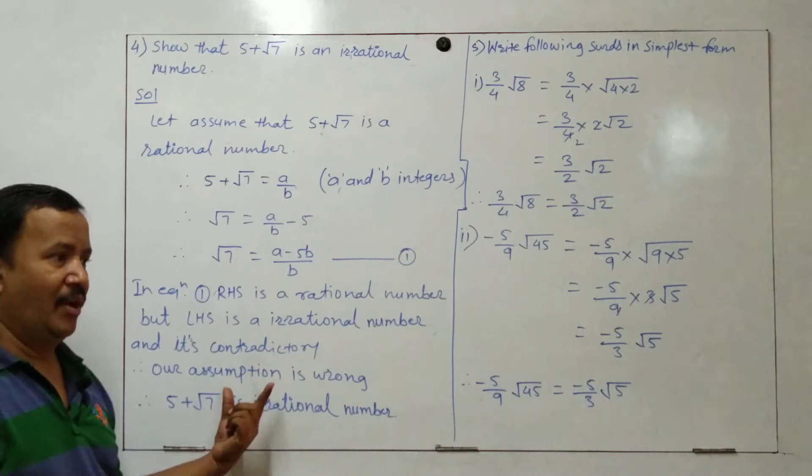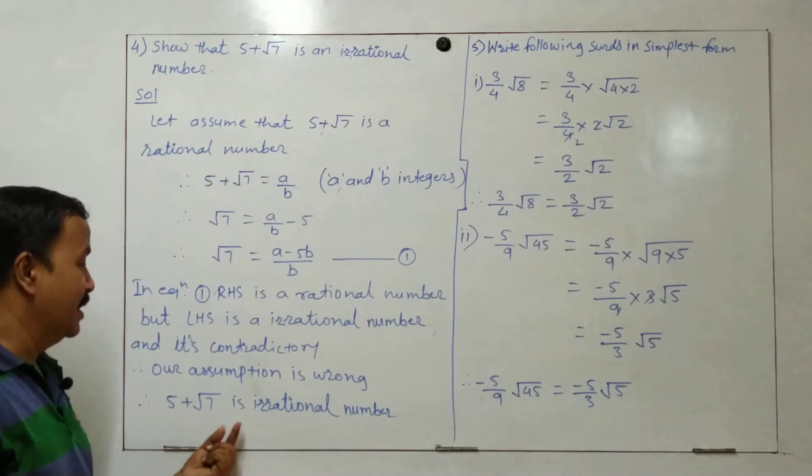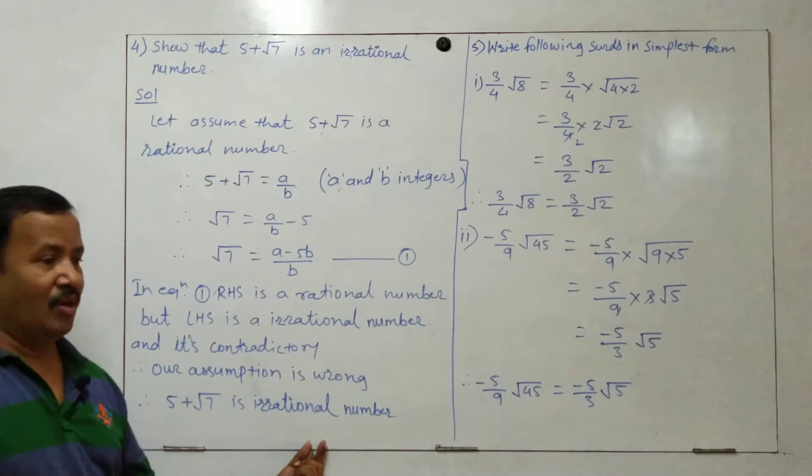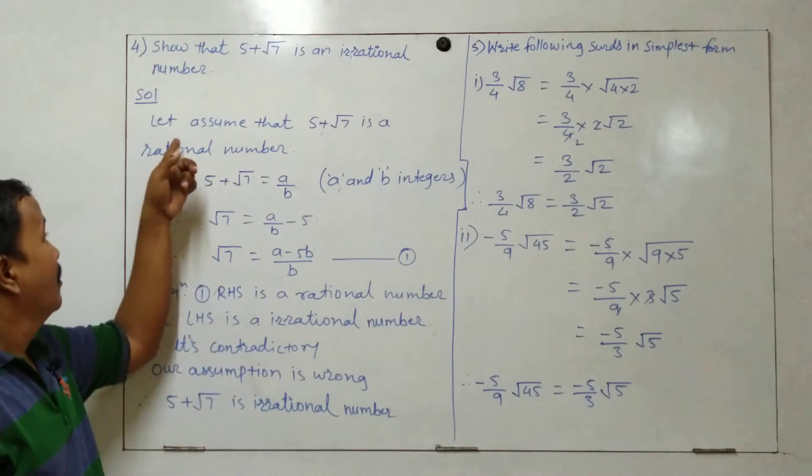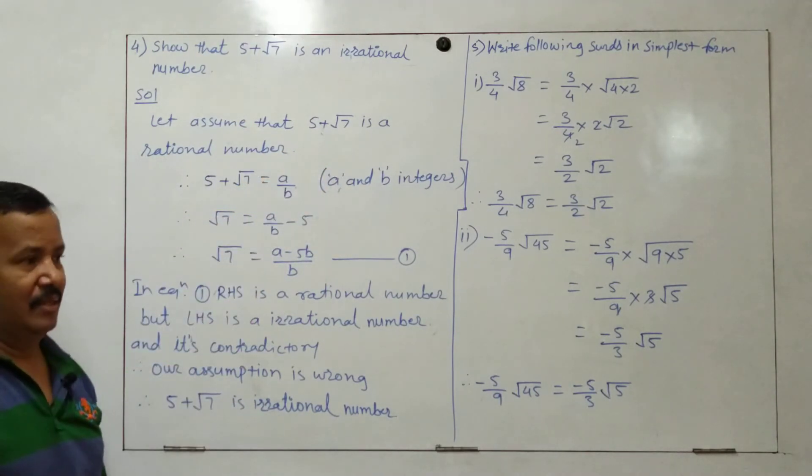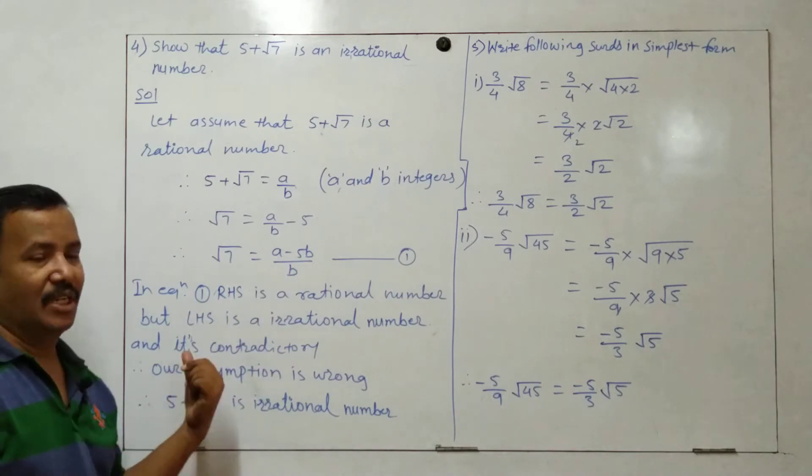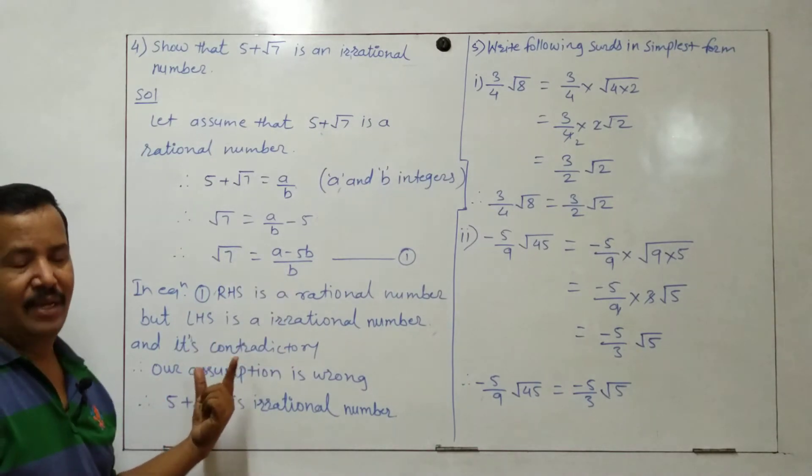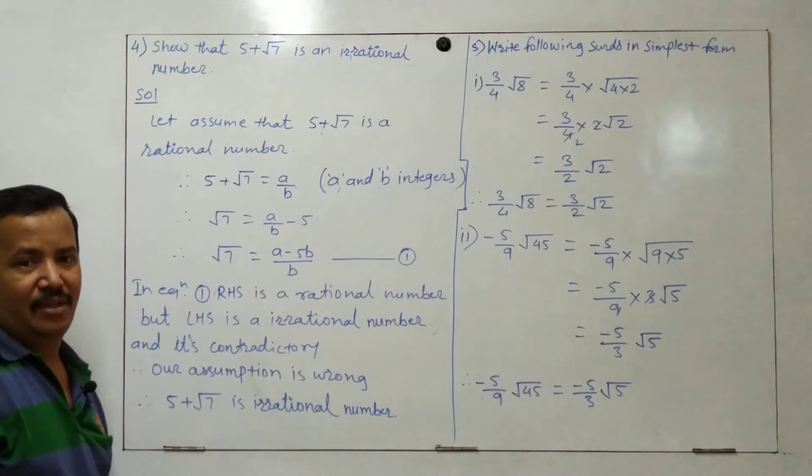If it is wrong, then 5 plus root 7 is an irrational number, because our assumption was that 5 plus root 7 is a rational number. If our assumption is wrong, then it's an irrational number.